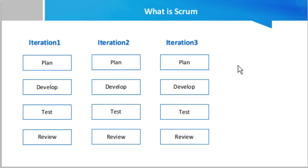In this model, the main focus is on successful delivery of the project — working software is much more important than detailed documentation. Documentation is there, but the main focus is on working software. Also, collaboration among multiple stakeholders — the customer, the development team, and others — is very important. The team should be flexible, self-organized, and working accordingly.